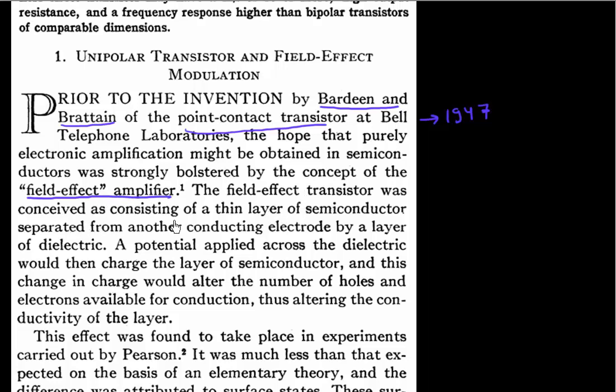And this involved making a thin layer of semiconductor separated from another conductor by a layer of dielectric. So what people were pursuing before was this thin layer of silicon separated by an oxide and there was another conductor over here, maybe a metal. So this is like the MOSFETs that we know of today. This was already being proposed much before 1947.